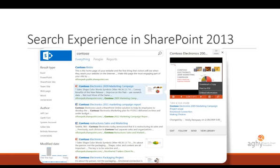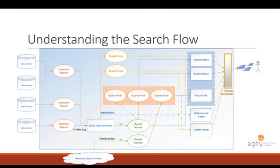In SharePoint 2013, this relationship chart — the search flow chart — looks very complex. This is not about the hardware infrastructure or the architecture; this is the logic flow of search, how search really works. On the left side you can see the content sources, and this is already the first challenge — we have to define content sources, schedule crawls, do content source inventory, know the content we want to work with, and then create the content source definitions inside SharePoint.